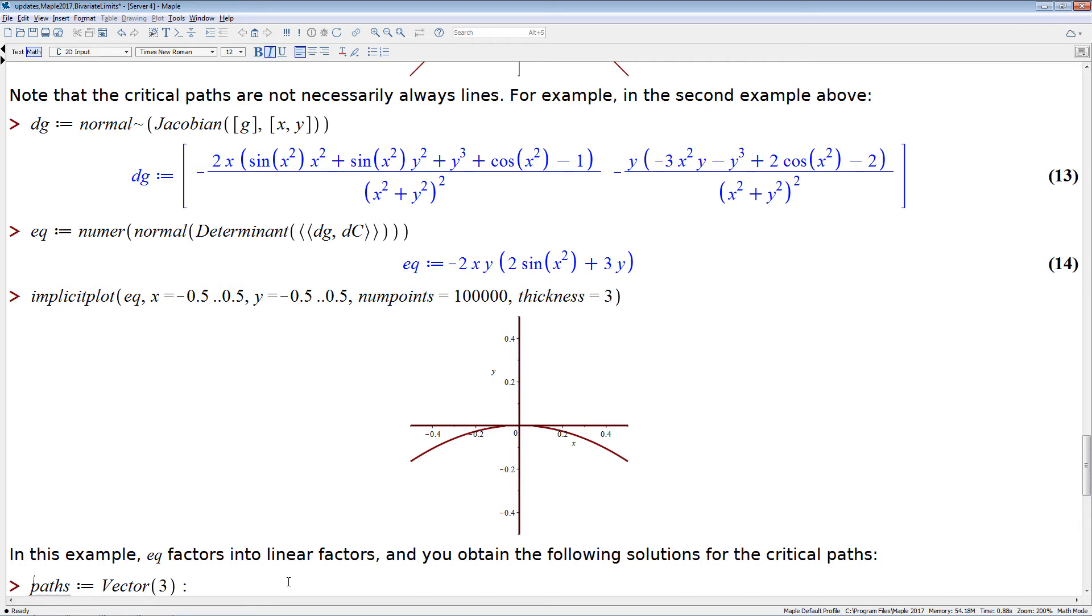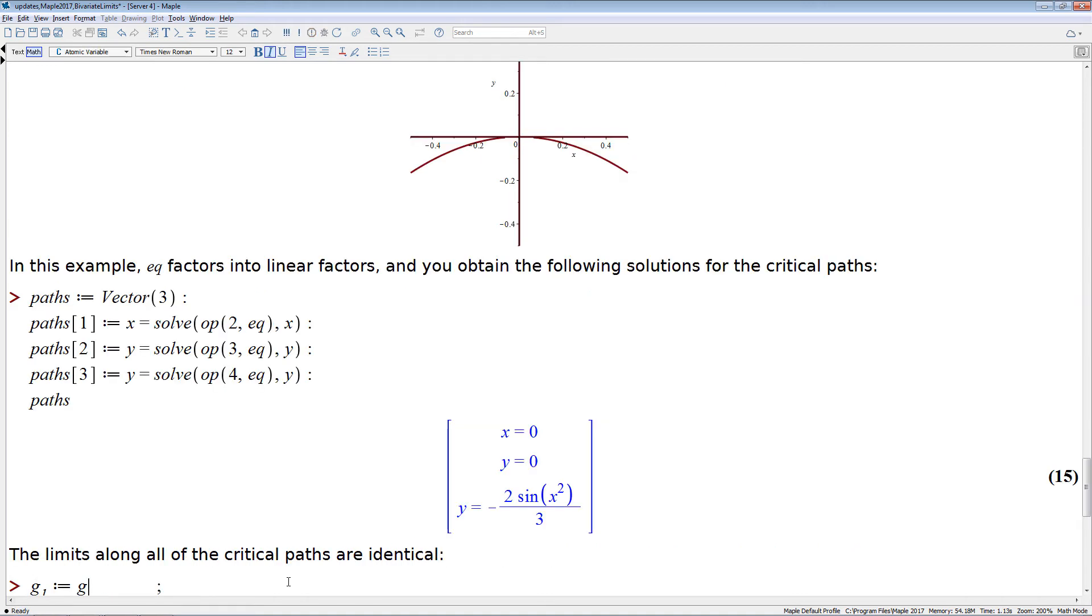But there's another critical curve, which is not a line, which is given by the third factor in that equation. And so now we create a vector that has all the critical curves in it, so the two lines, x equals 0, y equals 0. And the last one, which is also linear in y, so it can be easily solved for y, which gives you nonlinear curves.